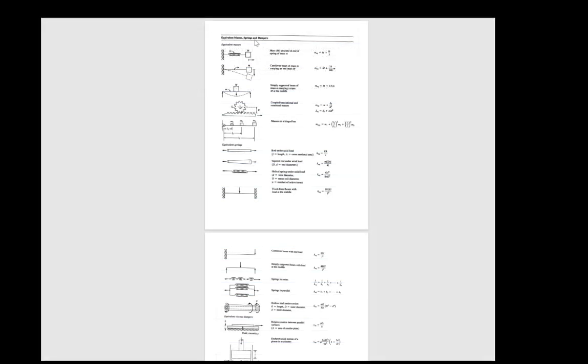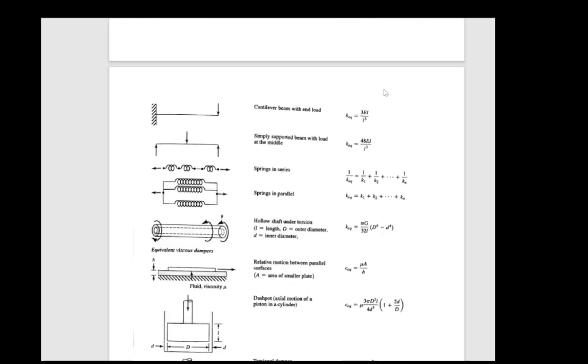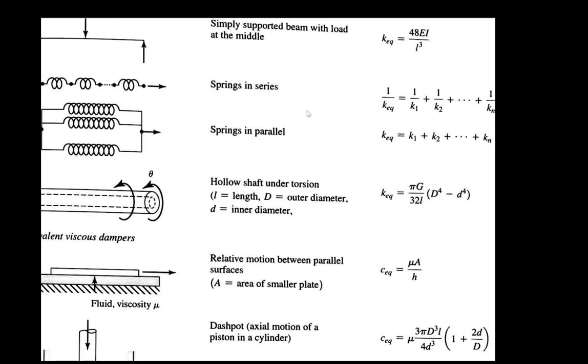From the equivalent mass spring damper table, we can go and look for the torsional shaft, and we get this is the formula for the equivalent constant of the shaft.